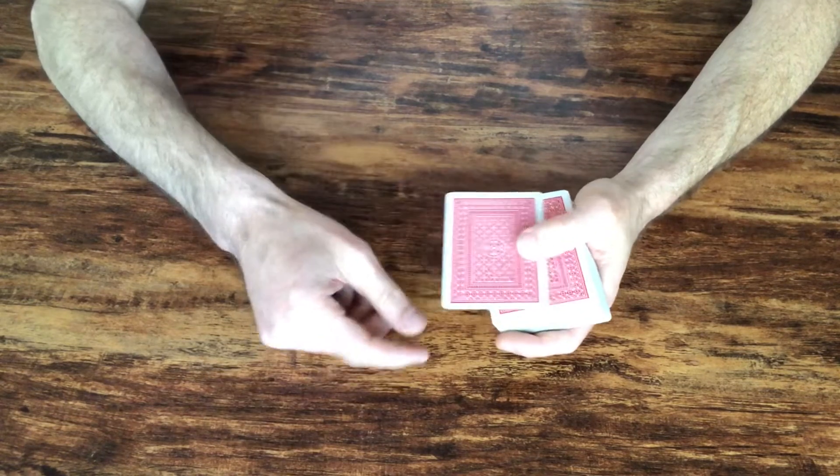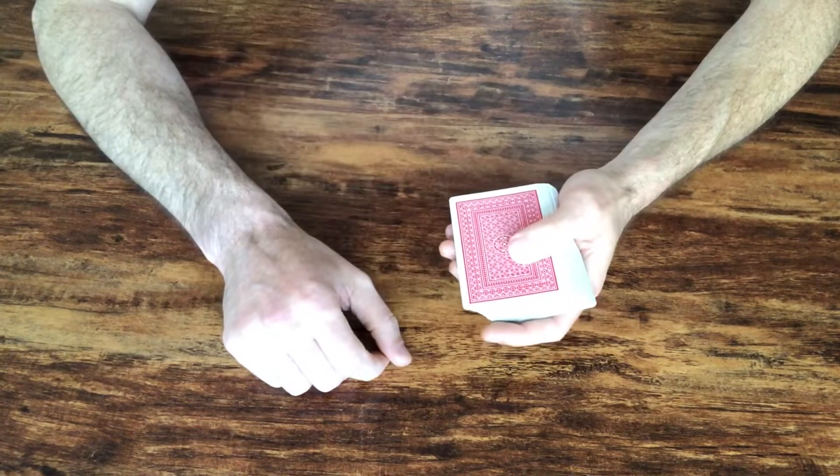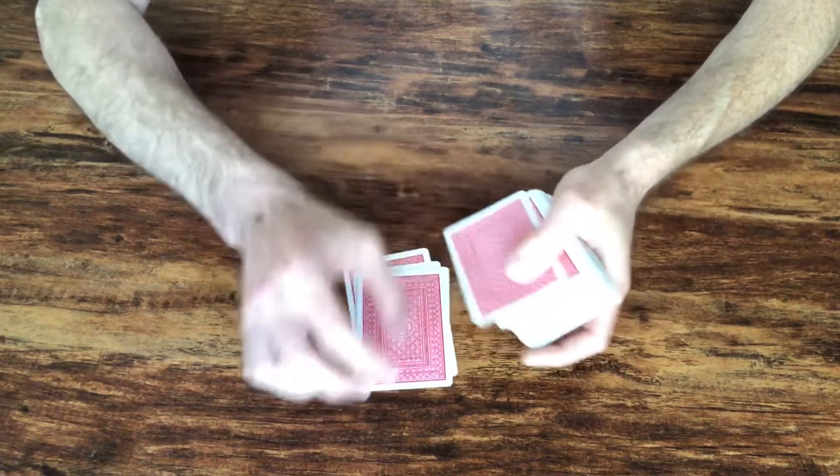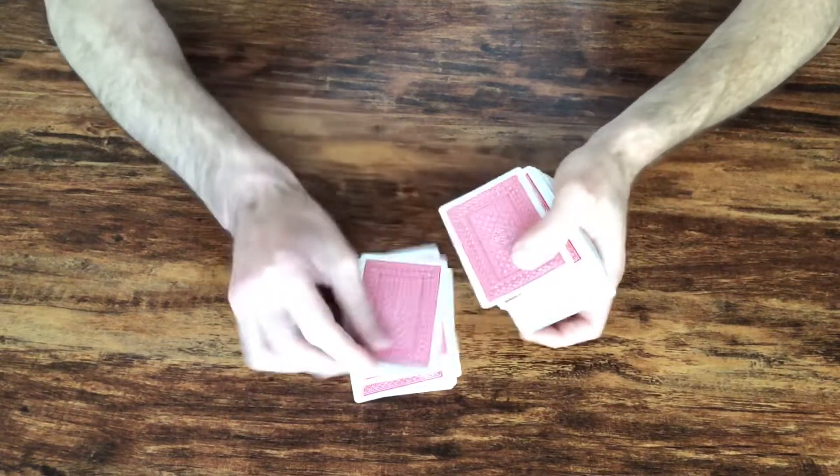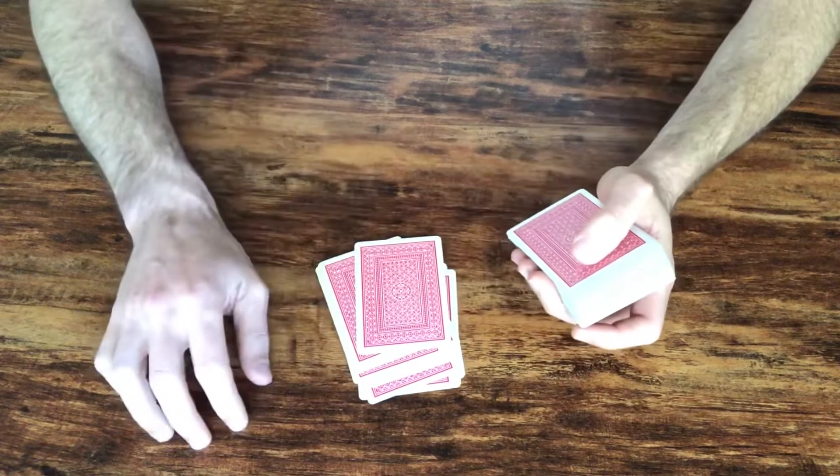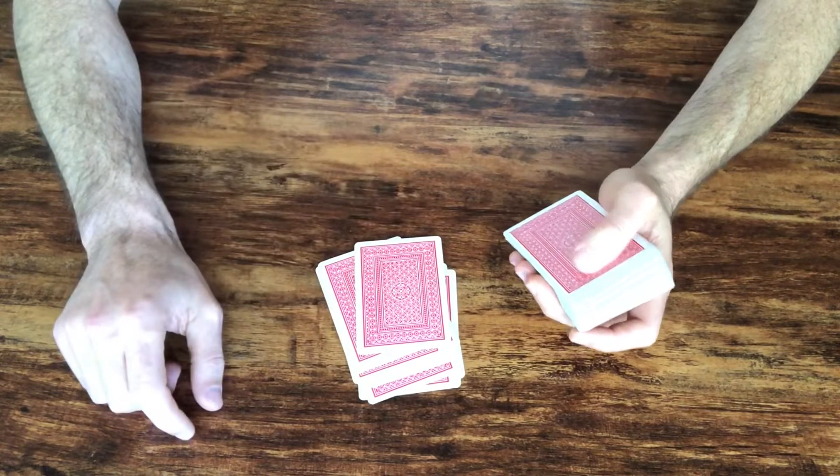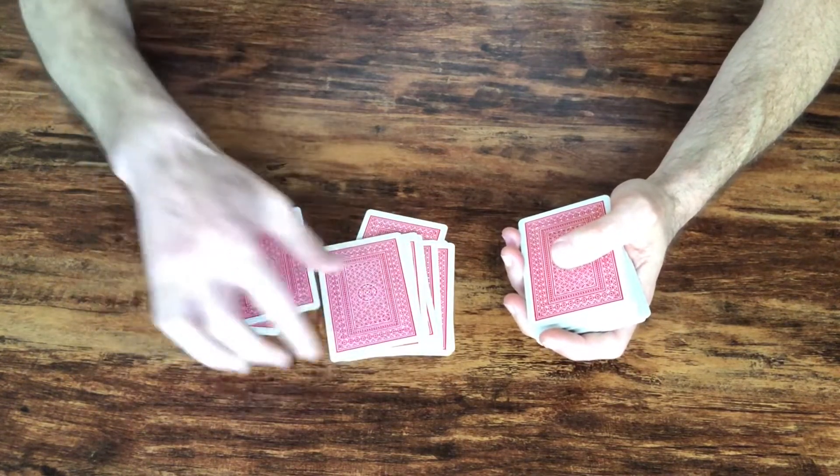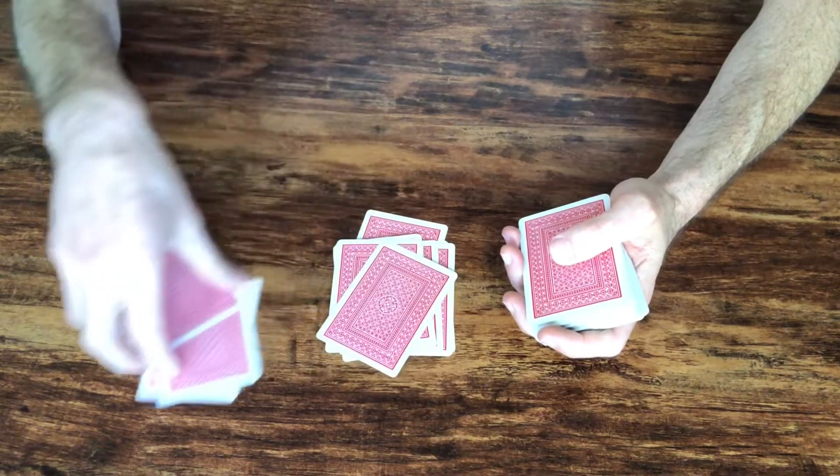But anytime you need to force the number nine with a deck, you would ask them for a number between 10 and 20. If they say 13, you count down 13: 1, 2, 3, 4, 5, 6, 7, 8, 9, 10, 11, 12, 13. You add those two numbers together which is 4. 1, 2, 3, 4 and you'll get to the ninth card.